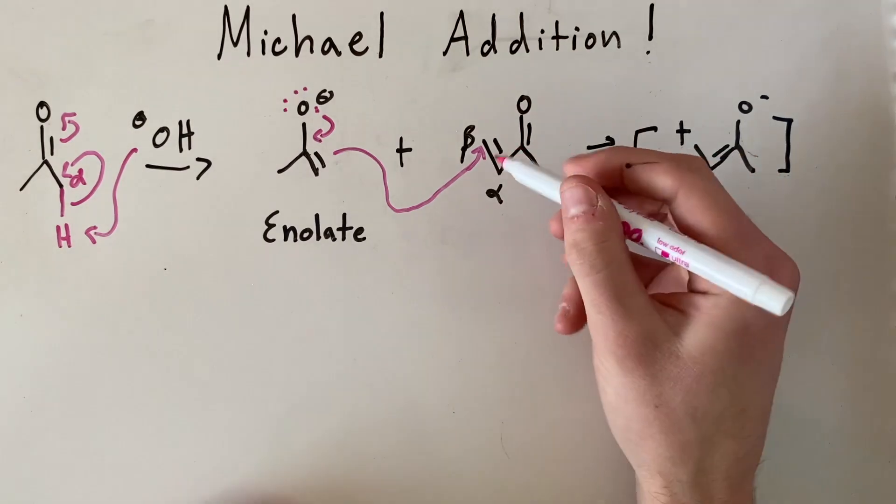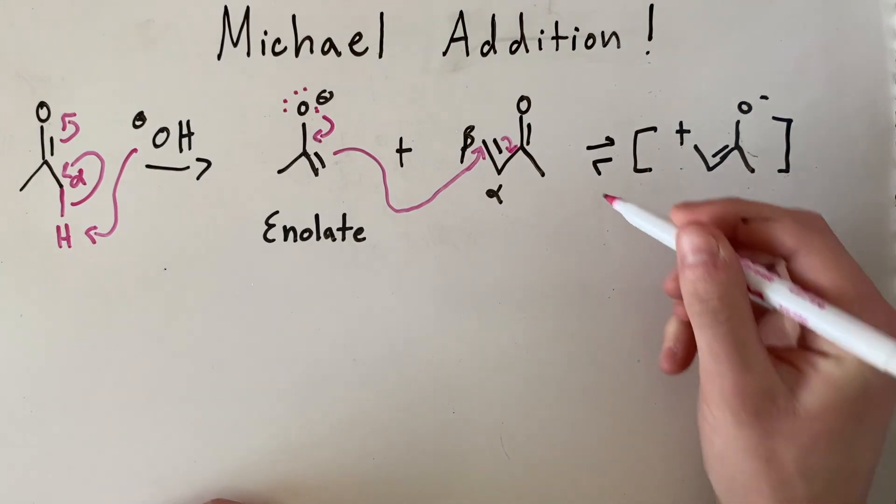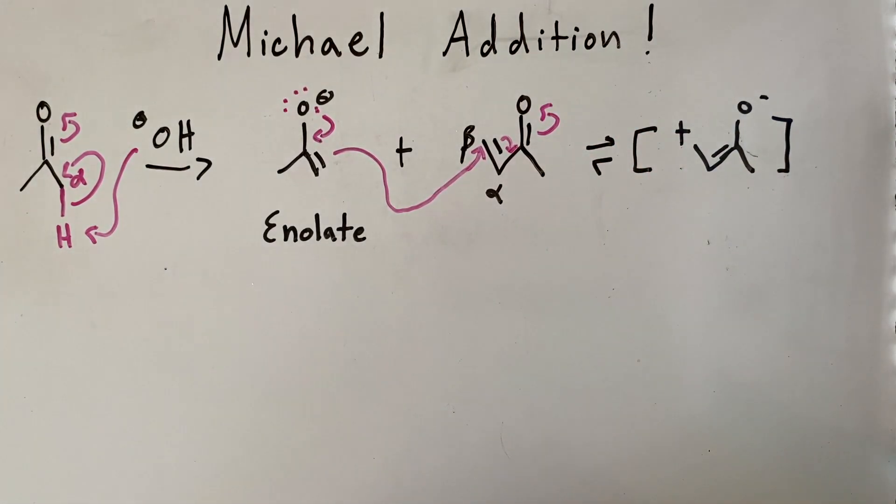From here, these pi electrons will go to form an alkene bond, pushing the pi electrons back up to the oxygen.